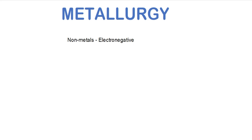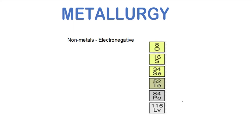Mostly the Group 16 elements, which are electronegative, form compounds with metals. These compounds are called chalcogens. 'Chalco' means ore, 'gen' means generators — so these elements generate the ores of the metallic elements.